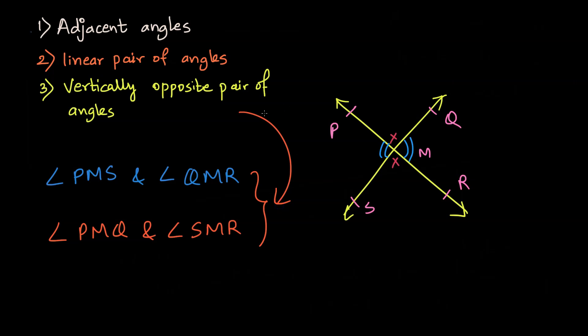Usually you can just spot vertically opposite angles by looking at the lines intersecting. You just see the cross like this and then you get two pairs of vertically opposite angles.